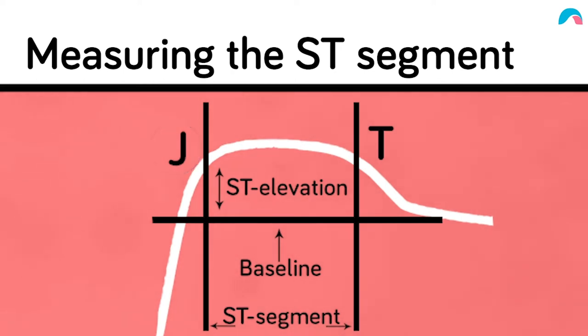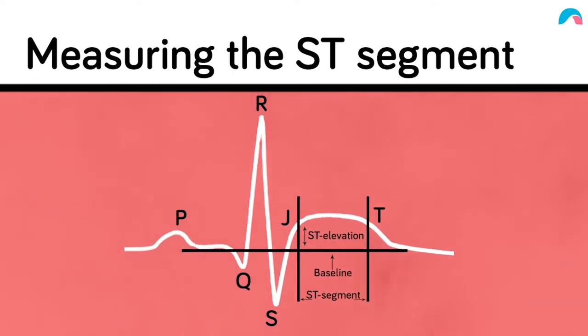If you follow the QRS complex on your ECG, you will see that the QRS complex is usually sharp pointed. So if you go down with the Q wave, up with the R wave, down with the S wave, and follow the S wave back to the baseline,